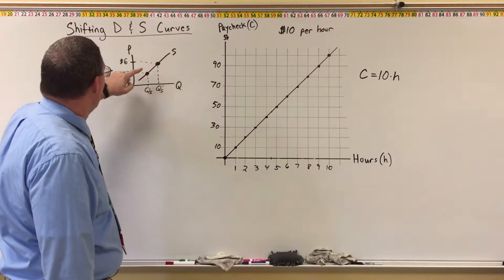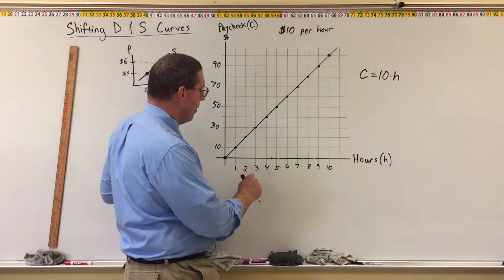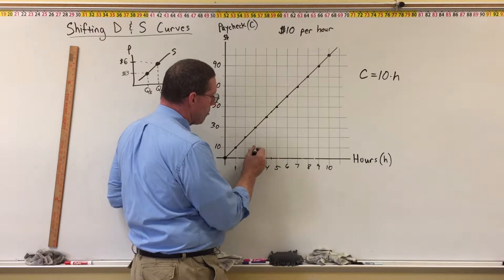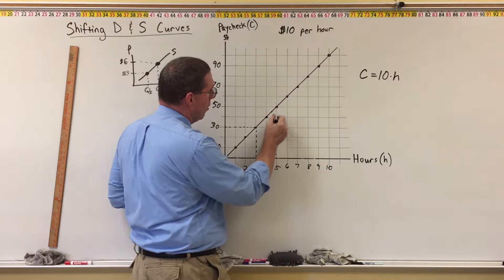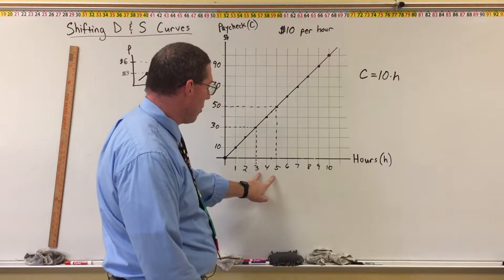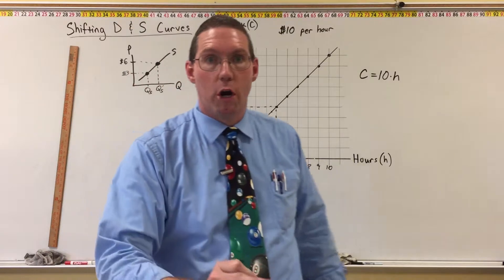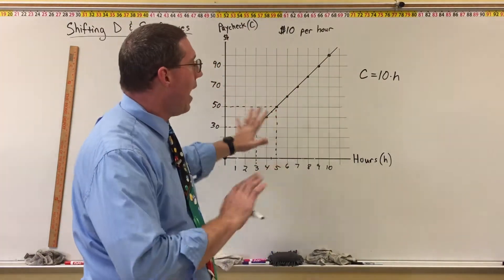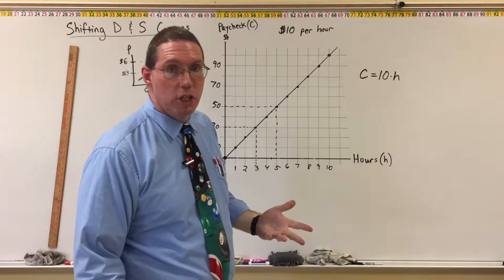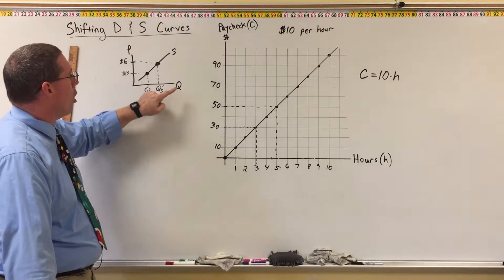Over here it's the same thing. If hours go up from 3 to 5, we earn $30 at 3 hours but $50 at 5 hours. We can have a change in the paycheck just by changing the number of hours. But we're just moving from one point on the curve to a new point on the same curve. The curve itself did not change, so there's no change in the relationship between hours and paycheck — the two variables are hours and paycheck, just like over here the only two variables are quantity and price.